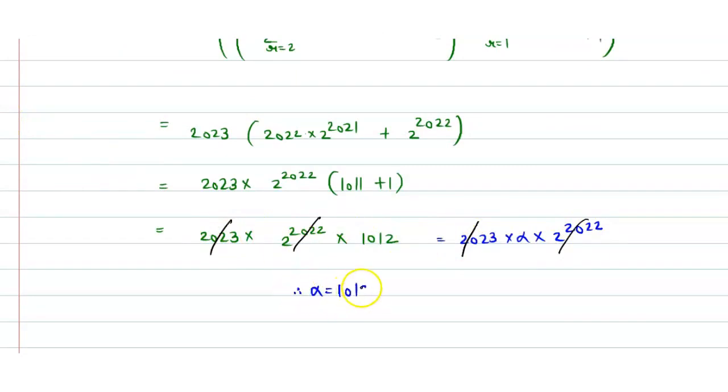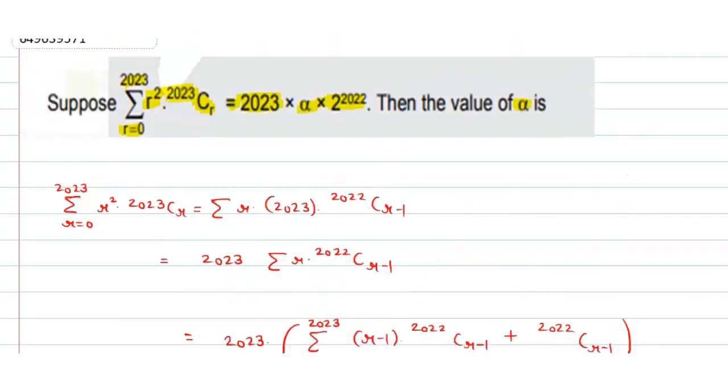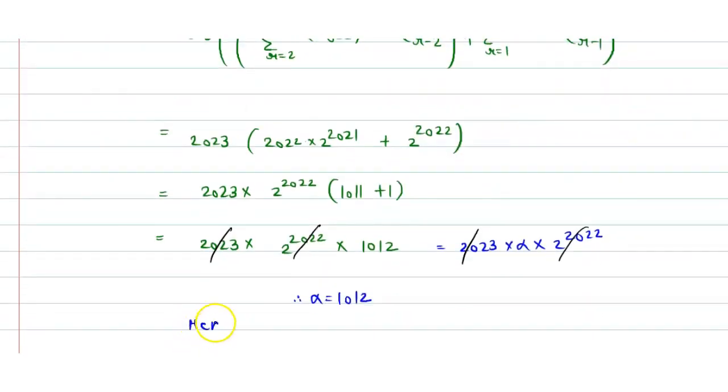So this is the required value we are asked to. Hence, we can write here, hence alpha is 1012 and this is gonna be our final answer of this question. That's all, thank you.